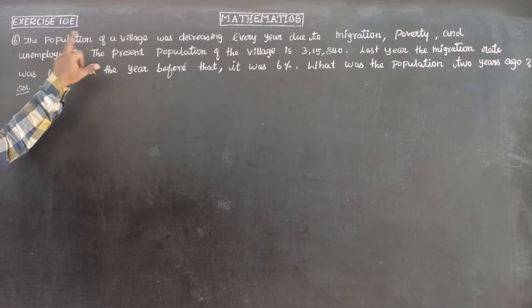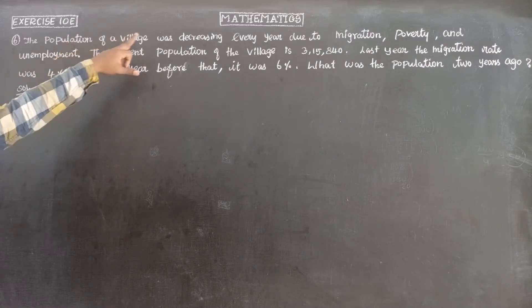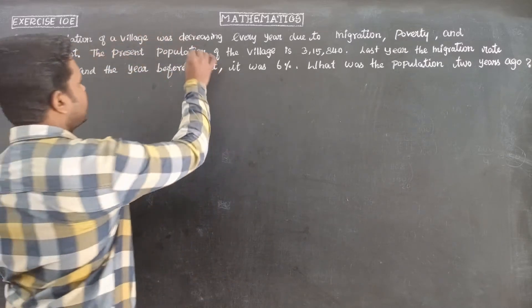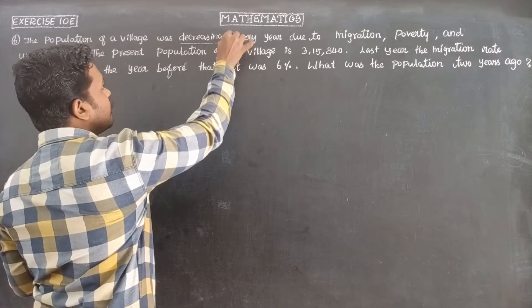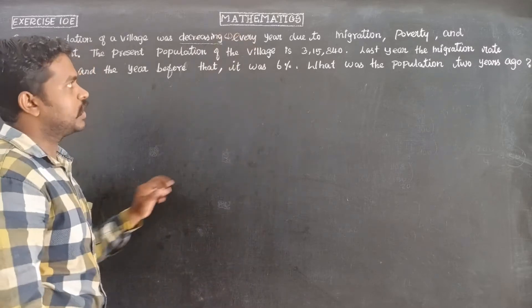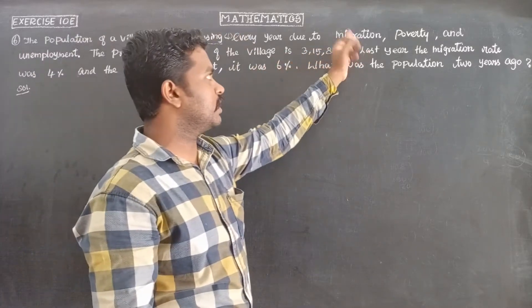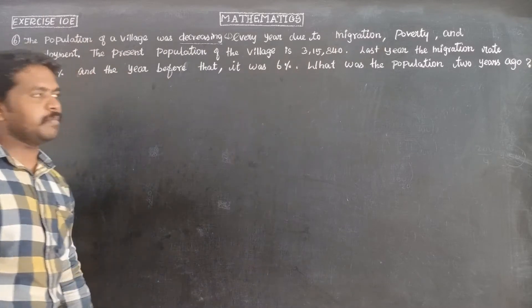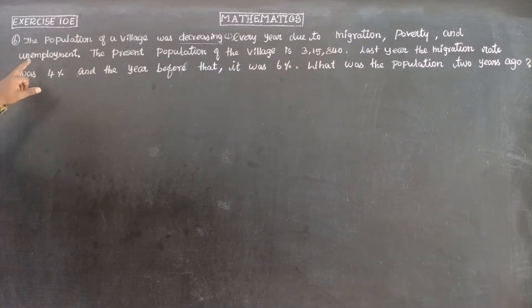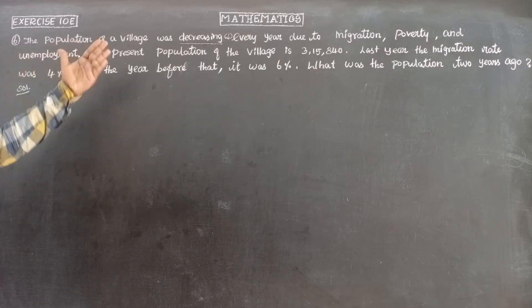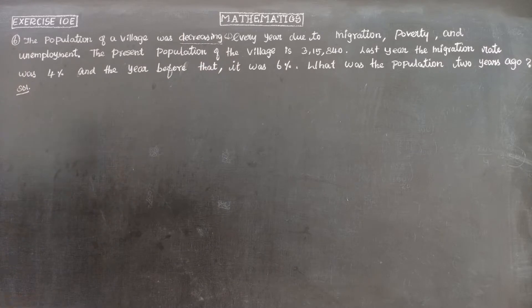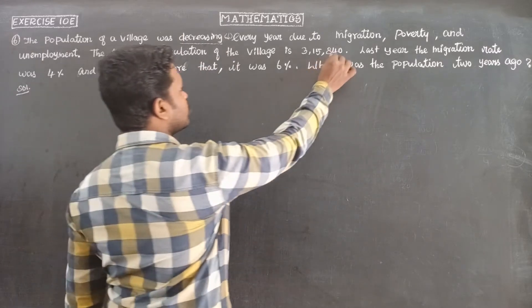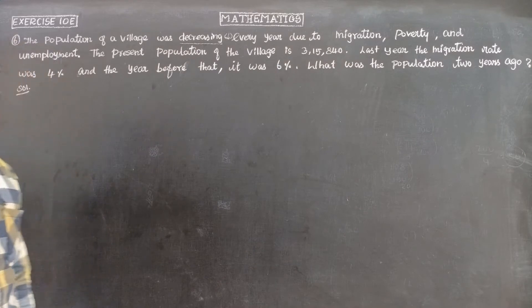The population of the village is decreasing. It's very important - population of the village is decreasing every year. The reason is migration, poverty, and unemployment. So the present population of the village is 3,15,840.